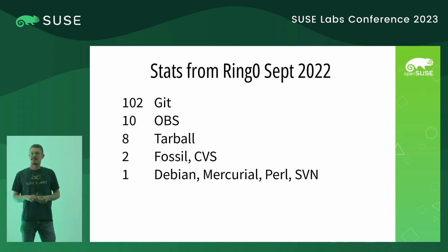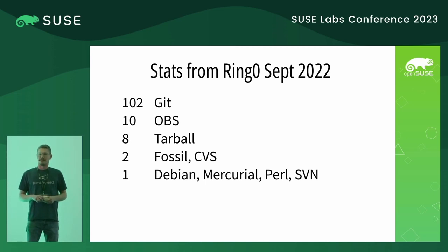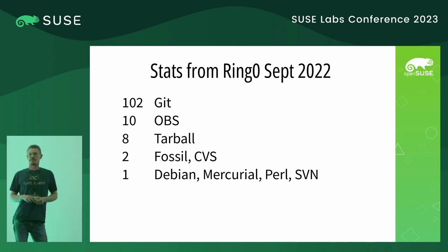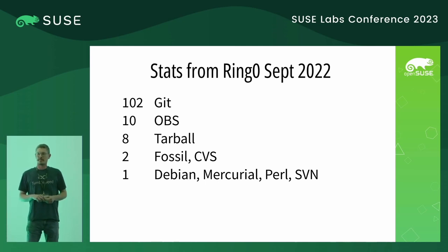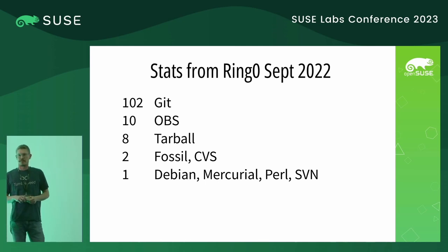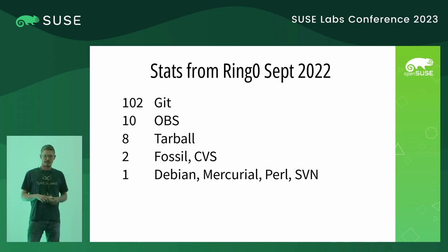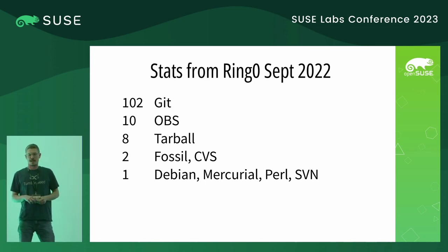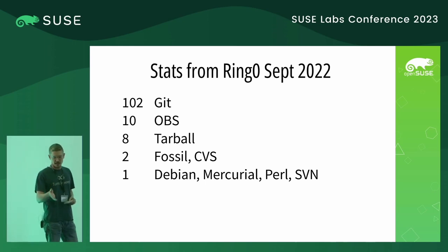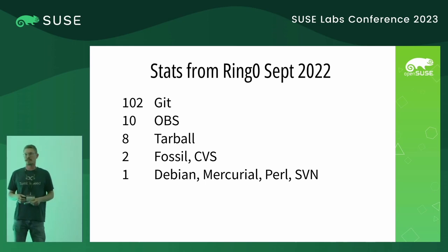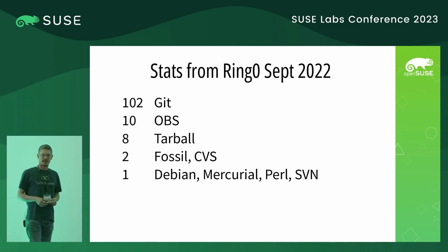Question from Hannes: these are package numbers from ring 0? Yes, package numbers from ring 0. How can a single package use several systems? It's two in Fossil, two in CVS, and there's one each in Debian, Mercurial, Perl, and SVN — one each.